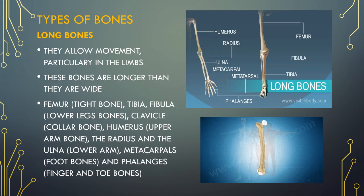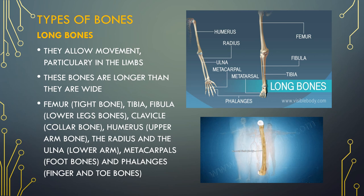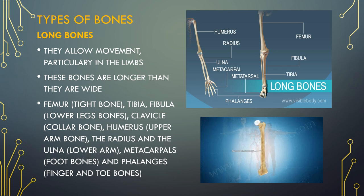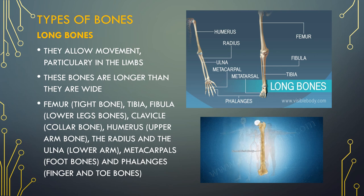Long bones are longer than they are wide, including the femur, which is the longest bone in the body, as well as relatively small bones in the fingers. Long bones function to support the weight of the body and facilitate movement. Long bones are mostly located in the appendicular skeleton and include bones in the lower limbs like the tibia, the fibula, the femur, the metatarsals and the phalanges.